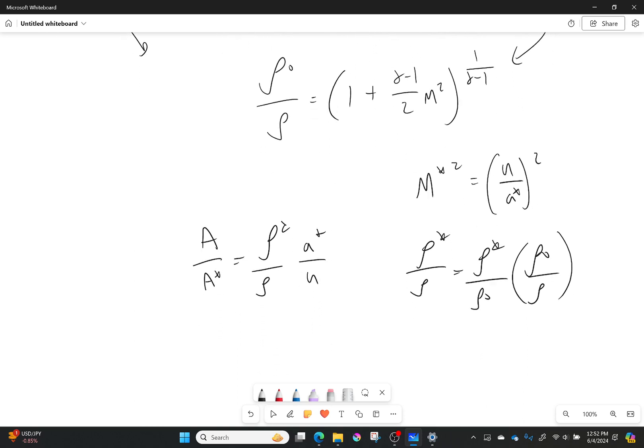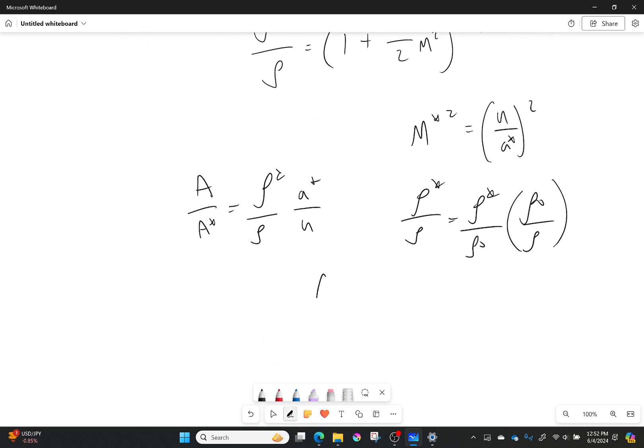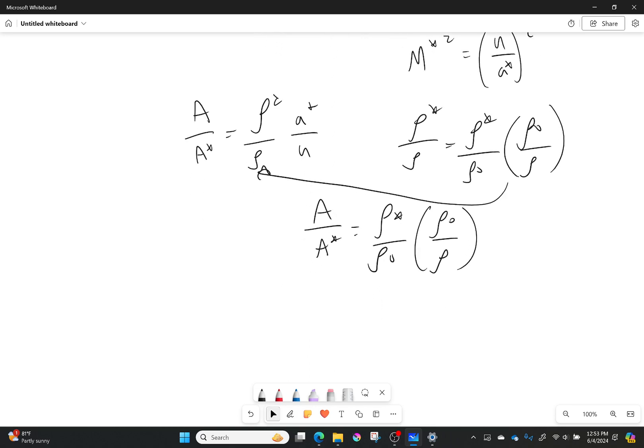Okay so we can plug that in here and we'll get that A over A star is equal to rho star over rho naught times rho naught over rho times a star over u. Glorious!